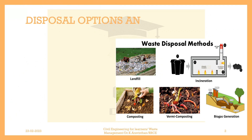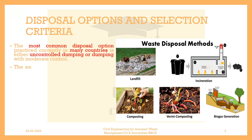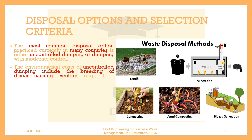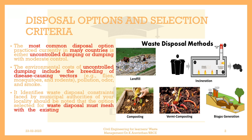Disposal Options and Selection Criteria. The most common disposal option practiced currently in many countries is either uncontrolled dumping or dumping with moderate control. The environmental costs of uncontrolled dumping include the breeding of disease-causing vectors — for example, flies, mosquitoes, and rodents — as well as pollution, odor, and smoke. The waste disposal constraints faced by municipal authorities should be noted, and the option selected must mesh with the existing socio-cultural milieu, infrastructure, etc.